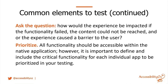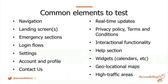Ask the question: how would the experience be impacted if the functionality failed, content couldn't be reached, or the experience caused a barrier to the user? Everything on a native app needs to be tested, but in terms of prioritizing, focus on critical functionality. Common elements you absolutely need to test include navigation, landing screens, emergency sections, login flows, settings, accounts and profiles, contact us, real-time updates, privacy policy, interactional functionality, help sections, widgets like calendars, geolocation maps, and high-traffic areas.